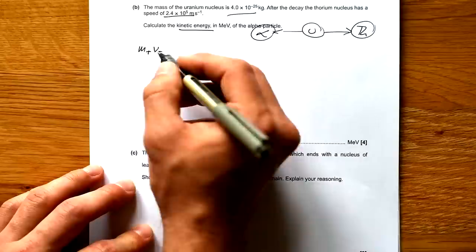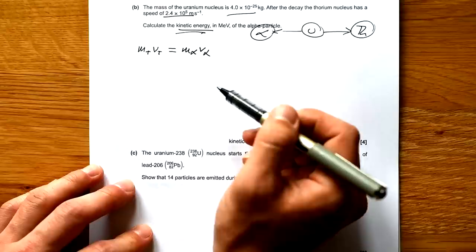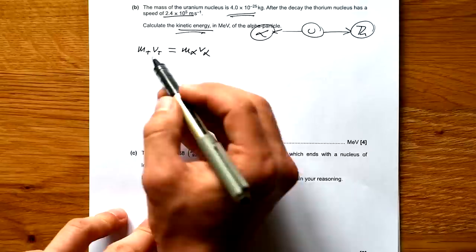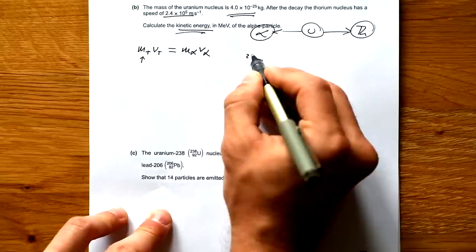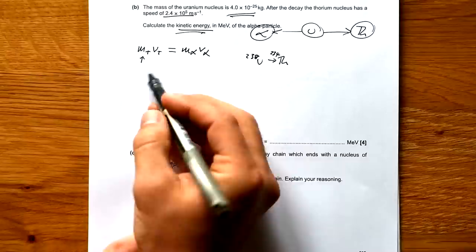So we can say that m_T v_T, that's the momentum of the thorium nucleus, is equal to m_alpha v_alpha. Technically there should be a minus there, but ultimately it doesn't matter because we're looking for kinetic energy. So we just need the magnitude. Now here's the sneaky thing: they've given us the mass of the uranium nucleus, but we need the mass of the thorium nucleus afterwards. We've gone from uranium 238 to thorium 234. So it isn't going to make a massive difference, but we should take that into account anyway.